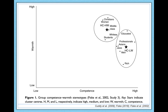Next we have the HCLW group — high in competence, really far to the right on the x-axis, but relatively low warmth. There is some variability, but groups here include rich people, men, professionals, and Asians, for example.